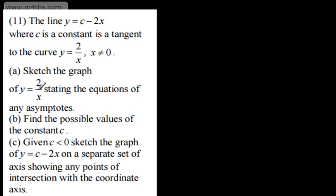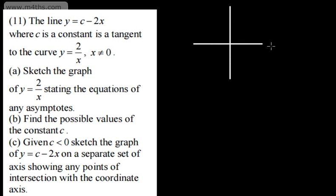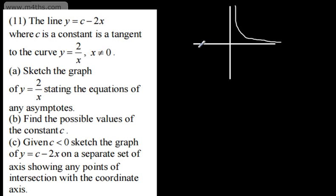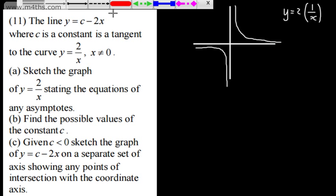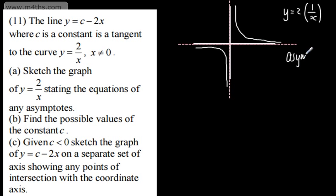In part A, we need to sketch a graph of y equals 2 over x, stating the equations of any asymptotes. This is the standard reciprocal graph y equals 1 over x, but with a scale factor stretch of 2 in the y direction. The asymptotes are the coordinate axes: x equals 0 and y equals 0. If you wanted, you could show the examiner a point on this, but stating the asymptotes is sufficient.